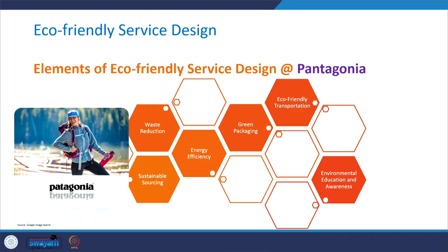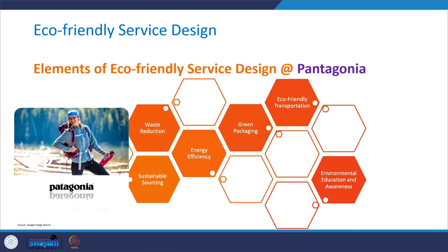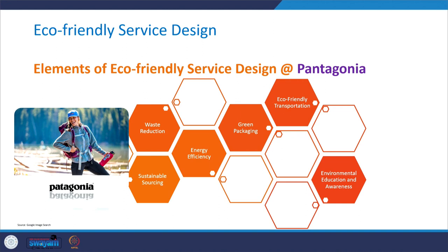Let's discuss these elements using the case of Patagonia. With respect to sustainable sourcing, Patagonia prioritizes sustainable sourcing of materials including organic cotton, recycled polyester, and responsibly sourced wool, working closely with suppliers to ensure ethical and environmentally responsible production practices. For energy efficiency, Patagonia invests in energy efficient technologies and practices, including using renewable energy sources, optimizing building designs for energy efficiency, and implementing energy-saving initiatives in manufacturing. For waste reduction, Patagonia implements waste reduction initiatives throughout its supply chain, promotes repair and reuse programs for its products, offers recycling options for old garments through its Worn Wear program, and strives to minimize packaging waste.